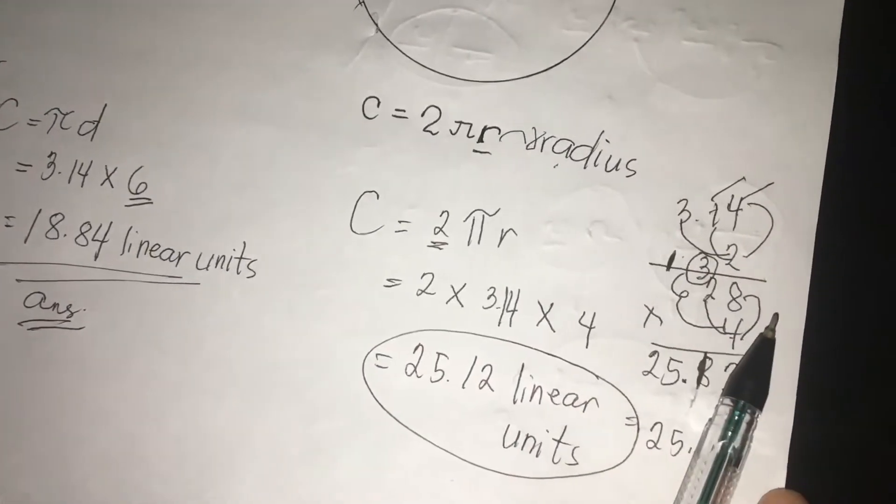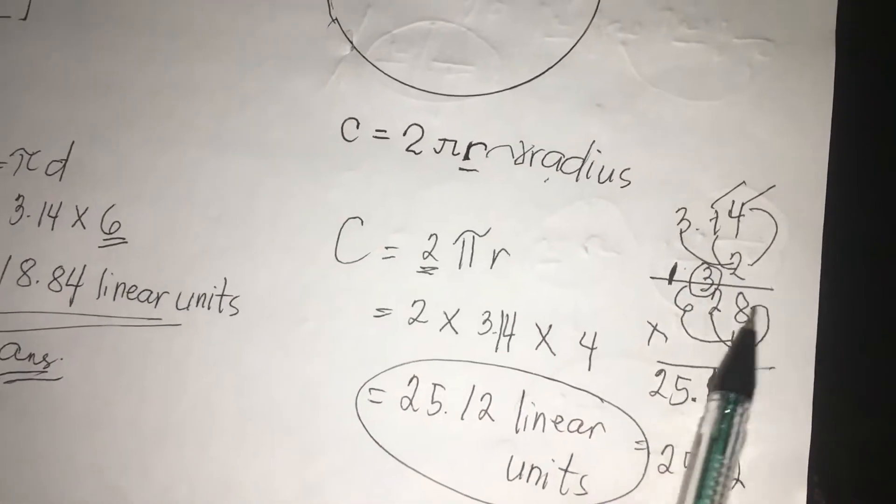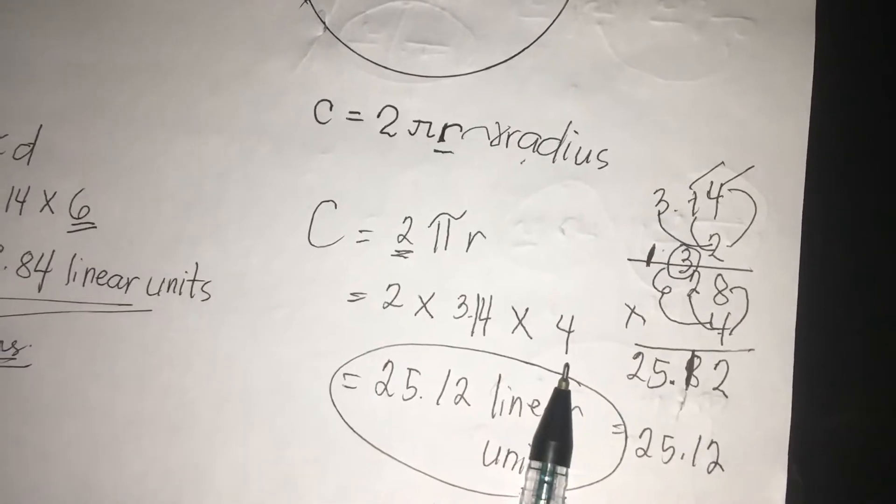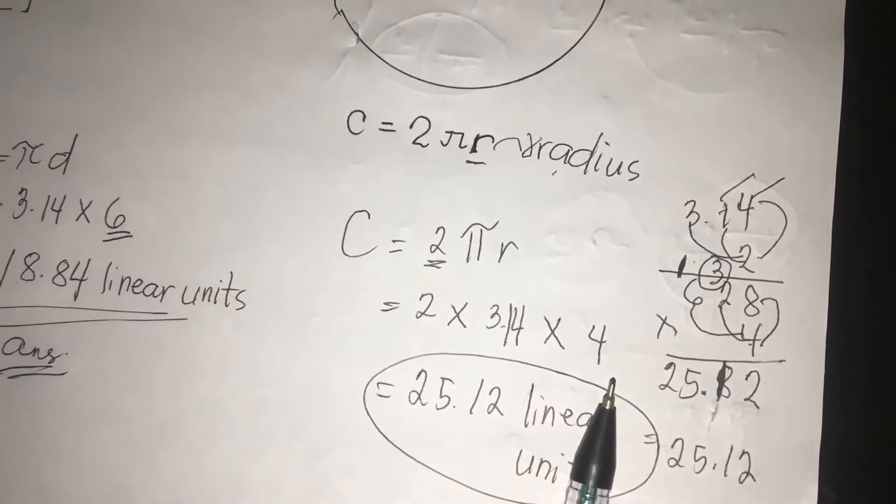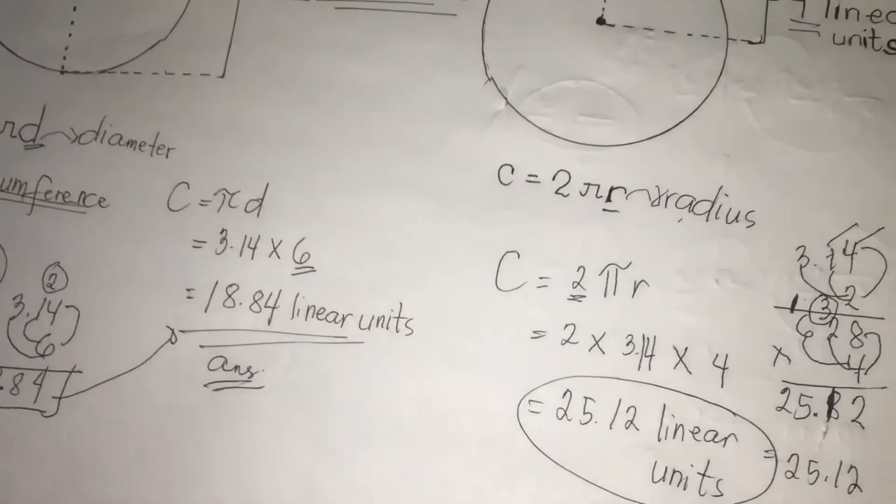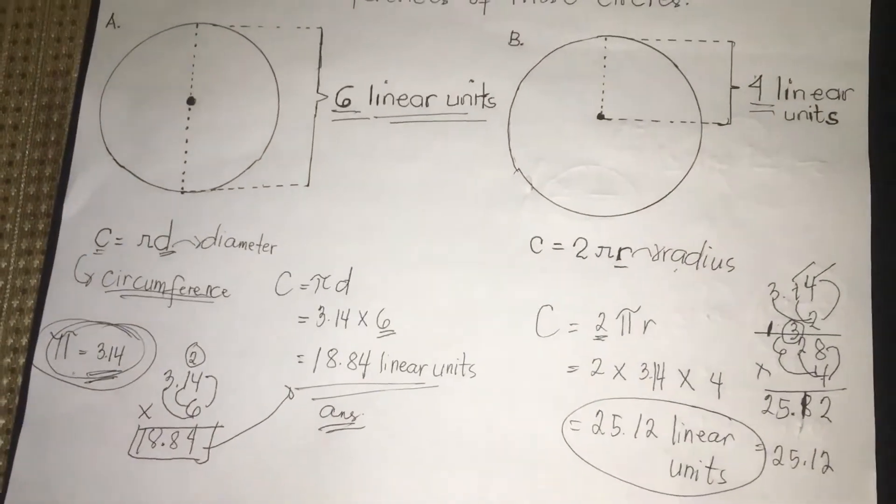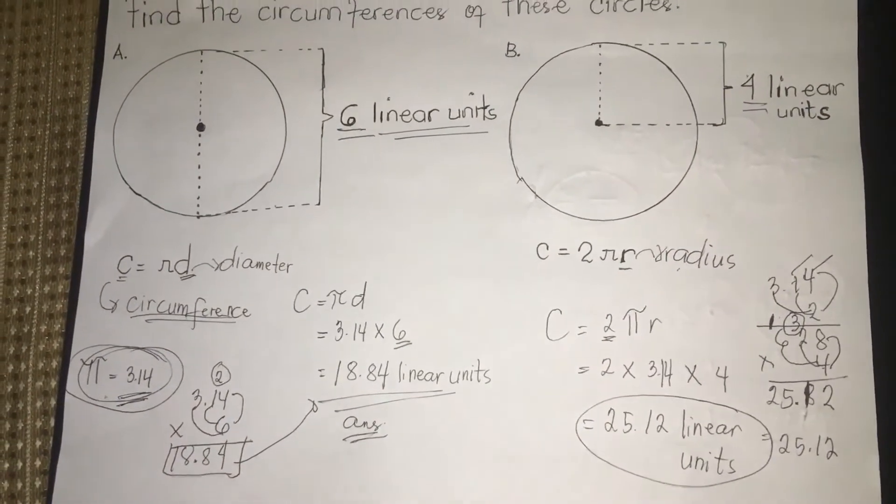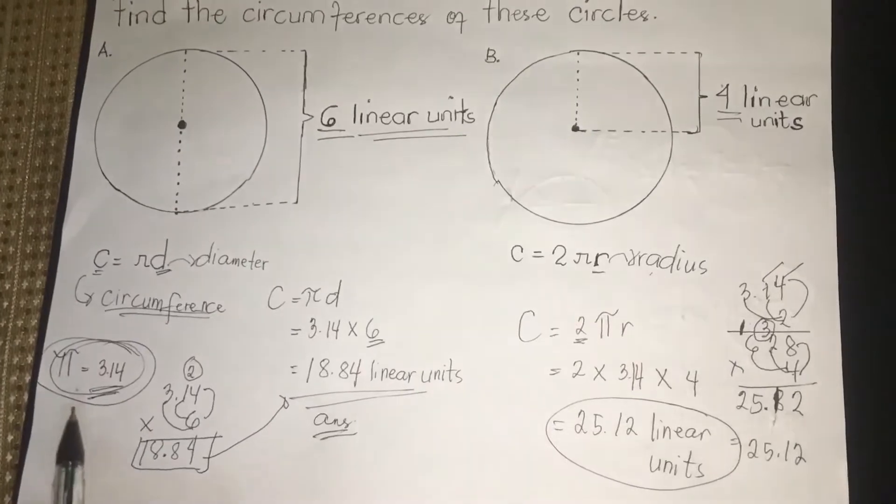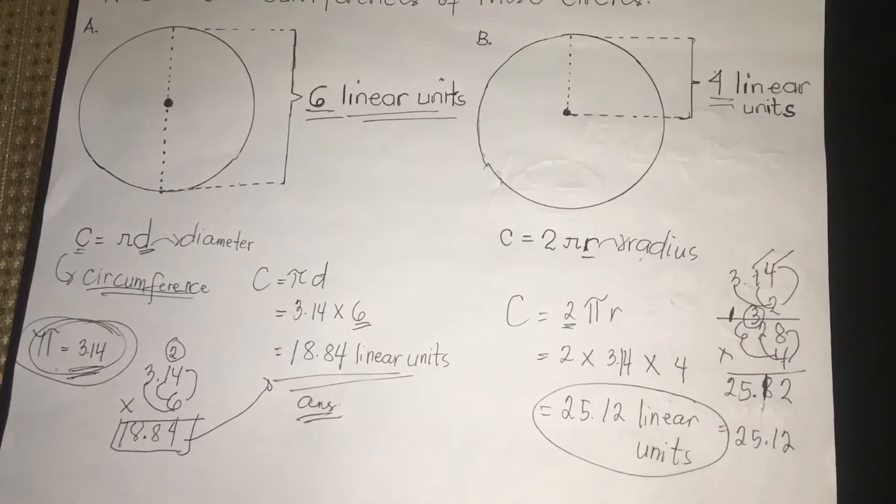I discussed how to multiply so that you will know how to find the answer. Again, to find the circumferences of these two circles, you need to think or put in your mind, just keep in your mind that the value of pi is 3.14.